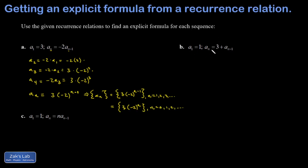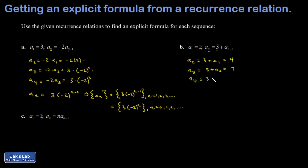For part b, the sequence starts at a₁ = 1, and each term is 3 more than the previous. So a₂ = 3 + a₁ = 3 + 1 = 4. Then a₃ = 3 + a₂ = 3 + 4 = 7. And a₄ = 3 + a₃ = 3 + 7 = 10. So the sequence is 1, 4, 7, 10.